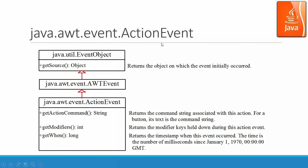java.awt.event.ActionEvent is one event type. ActionEvent inherits AWTEvent, which inherits EventObject. The ActionEvent class has the getActionCommand method, which returns the command string associated with this action — for example, the OK button label. getModifiers returns the modifier key held down during the action event. getWhen gives you a timestamp since January 1, 1970.